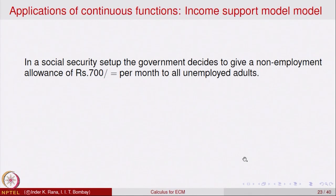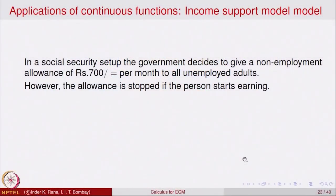Let us look at another model. In a social security setup, the government decides to give an unemployment allowance of 700 rupees per month to all unemployed adults. However, if the person starts earning, the allowance stops. Suppose an individual can earn 20 rupees per hour — the relation between earnings E and hours worked x is defined as follows.